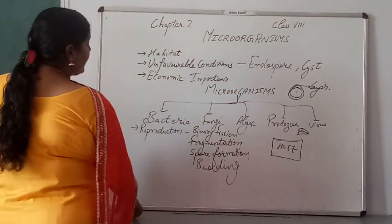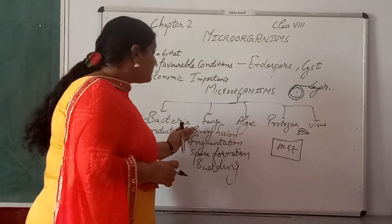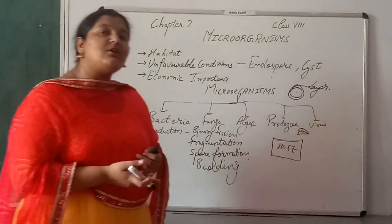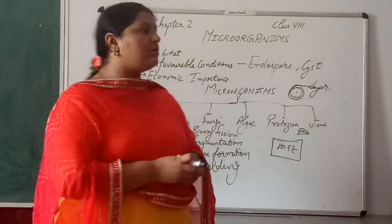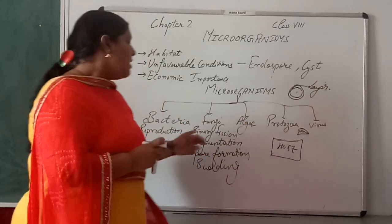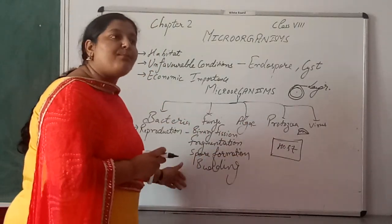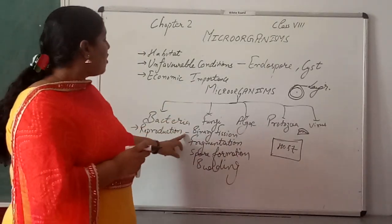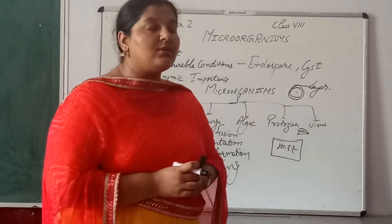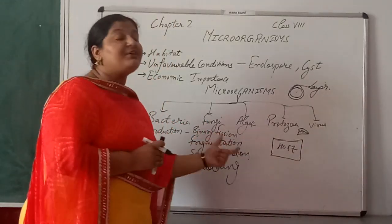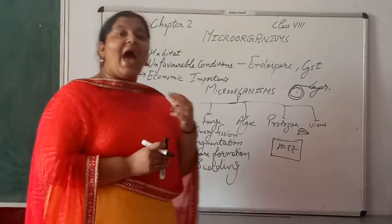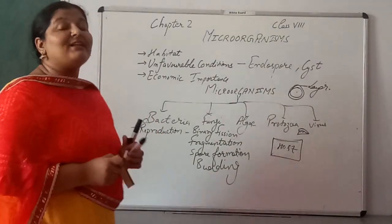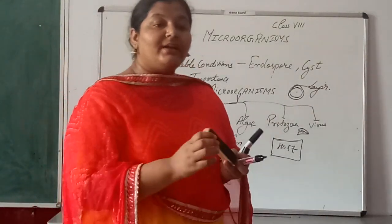The next topic is reproduction — the various methods by which micro-organisms multiply. The main methods are: binary fission, fragmentation, spore formation, and budding. In binary fission, 'binary' means two and 'fission' means division — the organism divides into two parts.